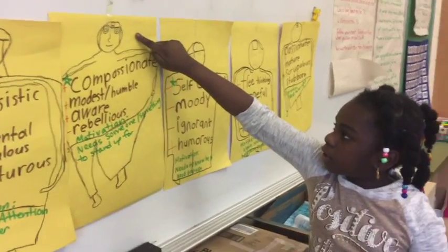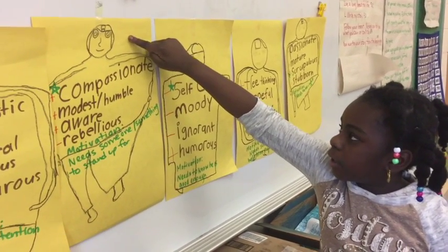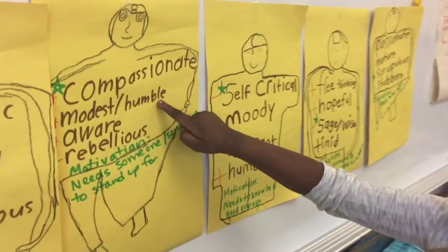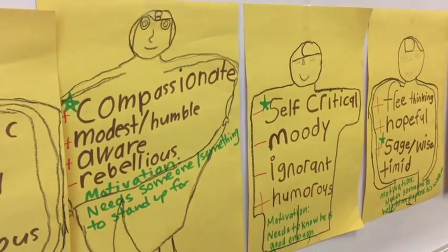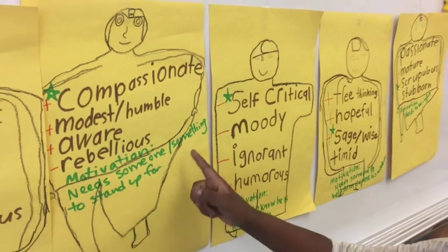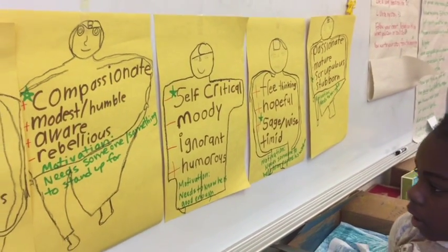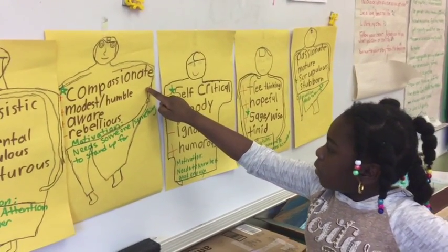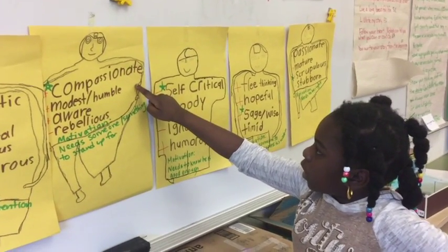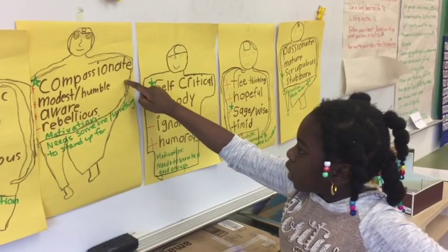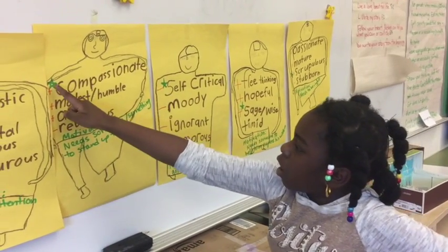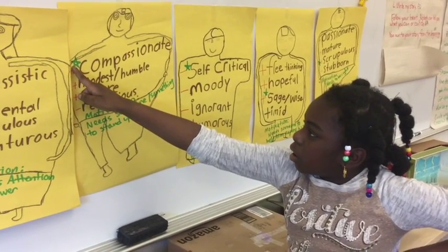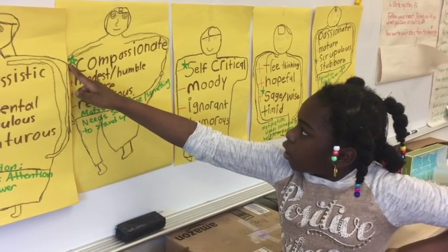This is one of our characters that is going to be in the opera, Character B. Character B is compassionate, modest, aware and rebellious. His motivation needs someone or something to stand up for. Two people in our class drew this character to see what it would look like. We put a star by compassionate because compassionate is the dominant trait for this character.